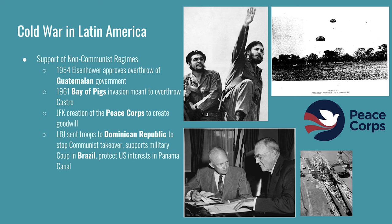Dwight Eisenhower and his Secretary of State, John Foster Dulles, were very active in working with the CIA and trying to influence the governments of other countries. They did this with the justification that they were protecting American interests in the region. This is very similar to the foreign policy of President Roosevelt earlier in the 20th century. The Roosevelt Corollary to the Monroe Doctrine asserted that the US had the right to intervene in Latin American countries to maintain stability and protect US interests. In Eisenhower's case, it meant supporting leaders who were not democratically elected.